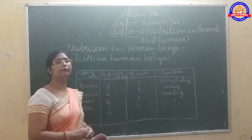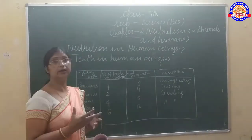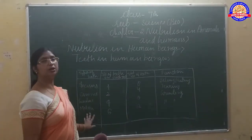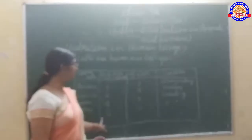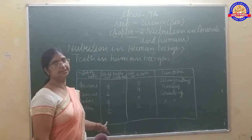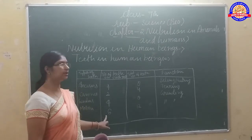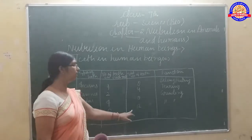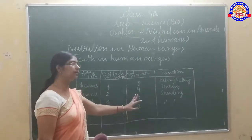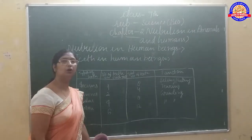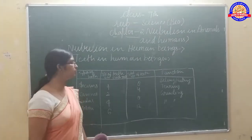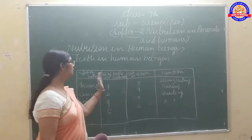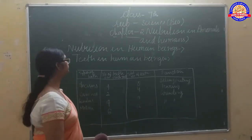Molars are used for chewing and grinding food. The upper jaw has 6 and the lower jaw has 6, making the total number of molars 12. They are used for chewing and grinding.